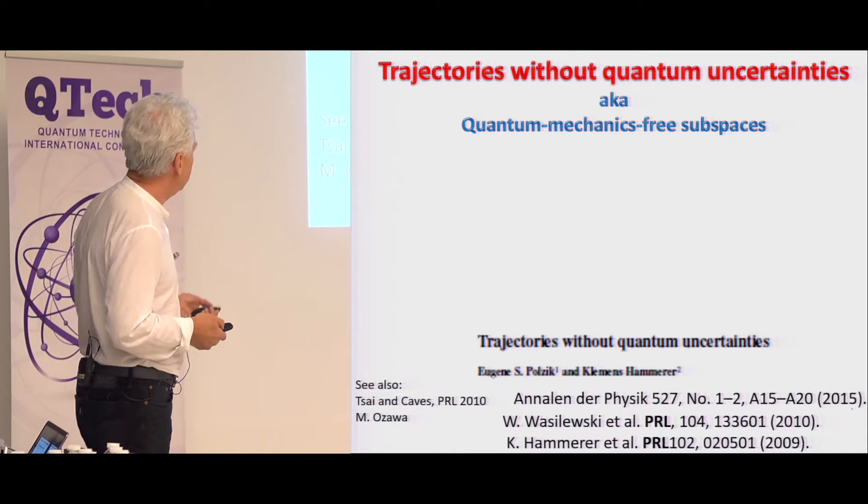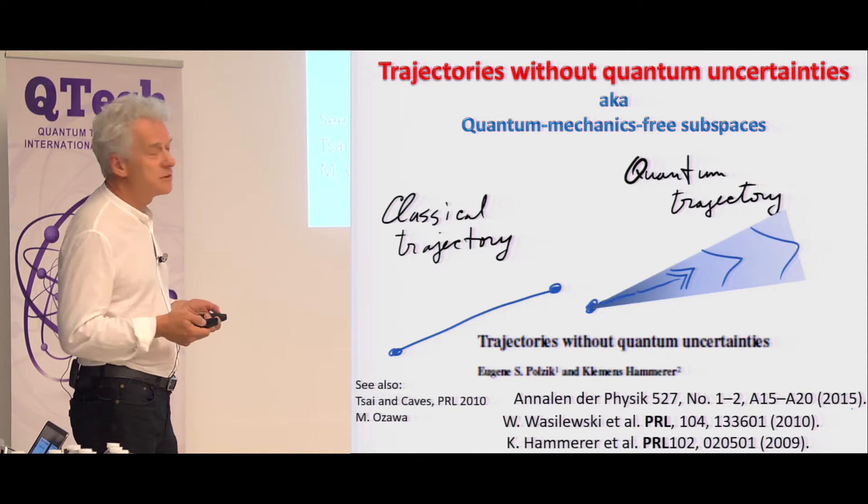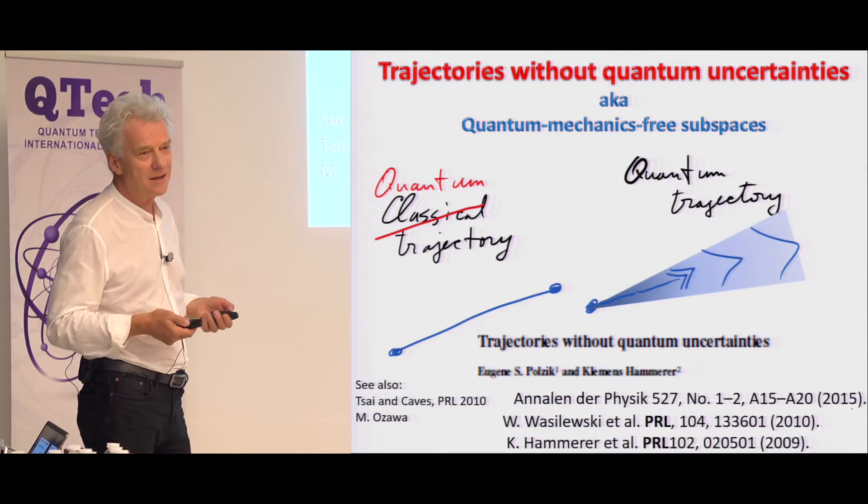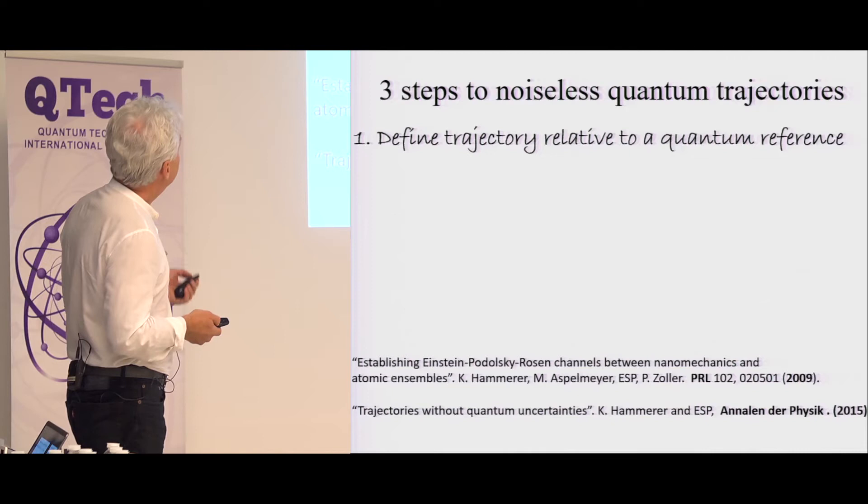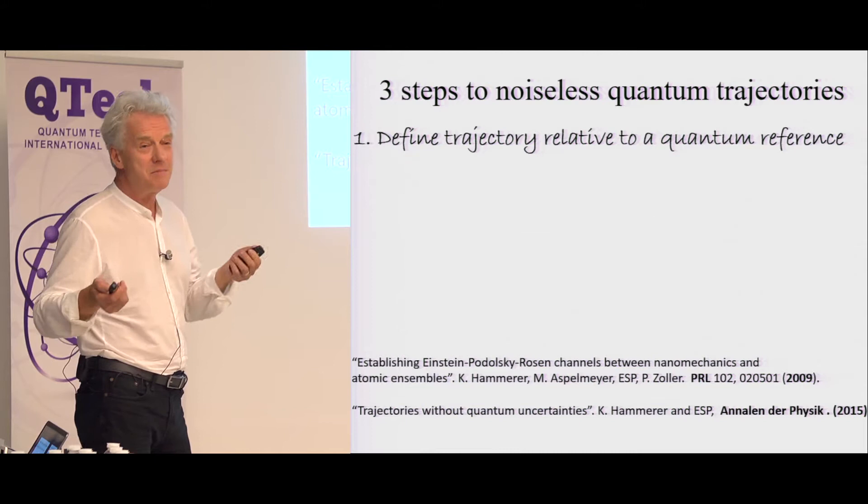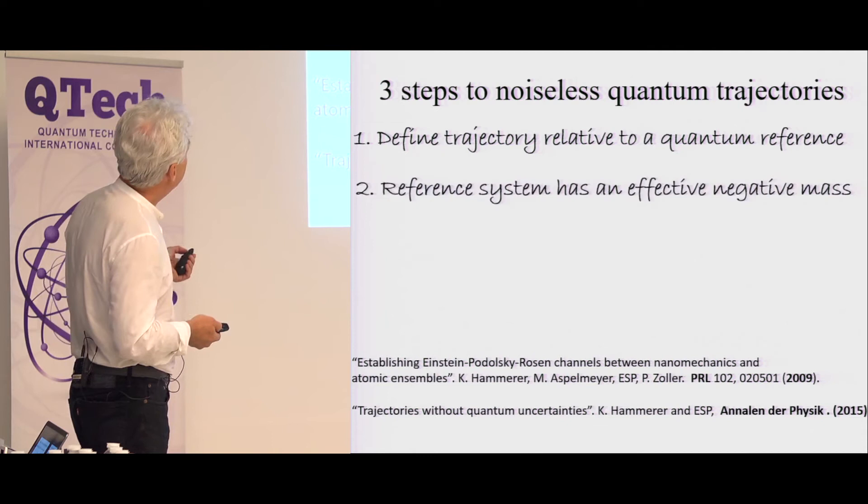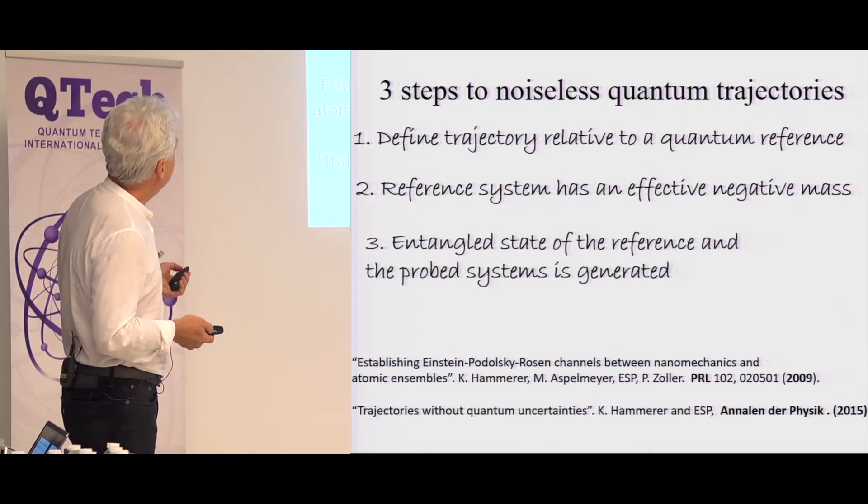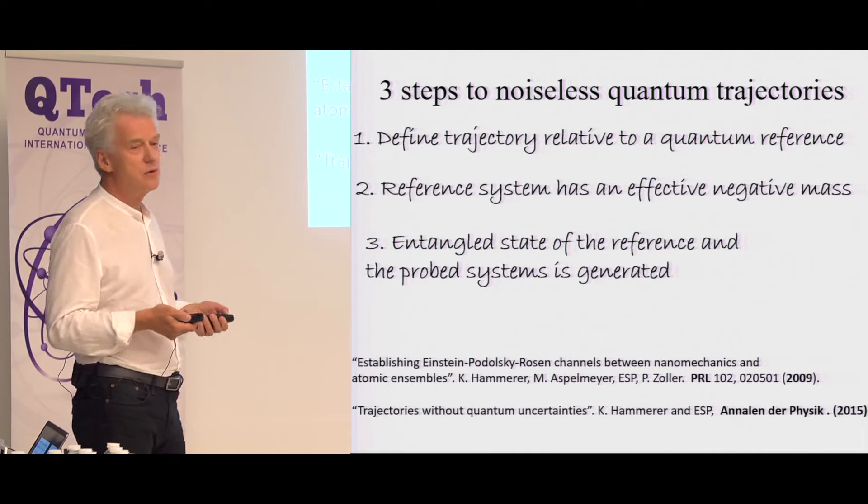So what I want to tell you today about is that both position and momentum can be measured with in principle arbitrary accuracy if you choose the right reference frame. There's been also a talk about reference frames in Philip's talk. So I'll continue, but it will be a very different story. We call this business trajectories without quantum uncertainties, and Karl Caves coined the term quantum mechanics free subspaces. You can read more about it in those papers. We want our quantum trajectory to look like classical trajectory so we can follow an object with unlimited accuracy. And we need three steps for that.